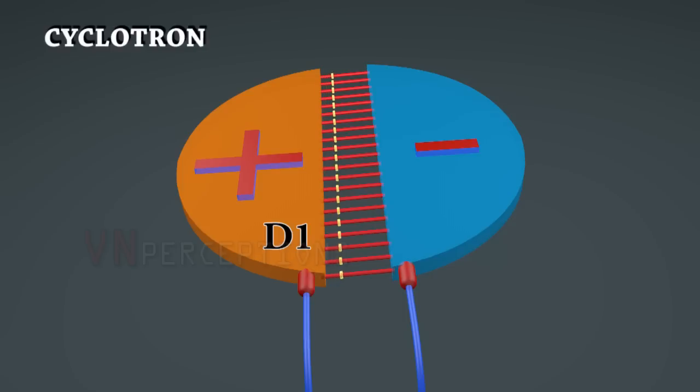If D1 is in the positive potential then D2 will be in exact opposite, that is negative potential at the same time. In this way they would be oscillating and an electric field would be created between them.